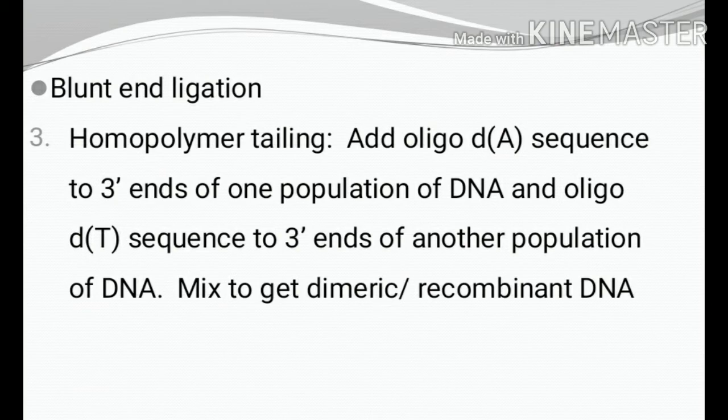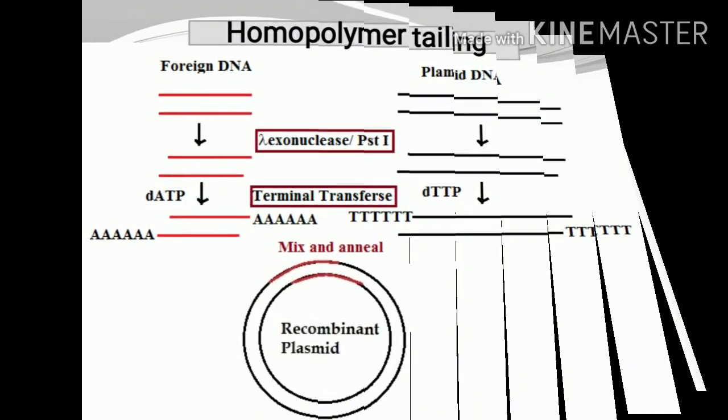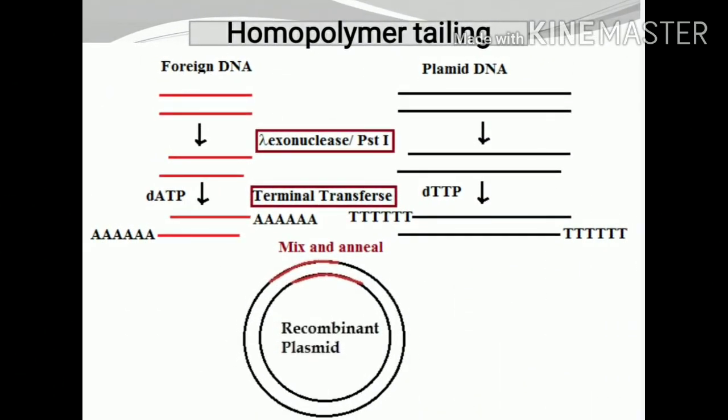The enzyme used is terminal transferase, which can add bases of 10 to 40 nucleotides. The enzyme prefers lambda exonuclease-cleaved DNA or restriction enzyme PstI-cleaved DNA. In the figure, foreign DNA and plasmid DNA are cleaved with lambda exonuclease or PstI to produce a 3-prime overhang. Terminal transferase then adds dATPs to the foreign DNA and dTTPs to the plasmid DNA, which are mixed and annealed to get the recombinant plasmid.